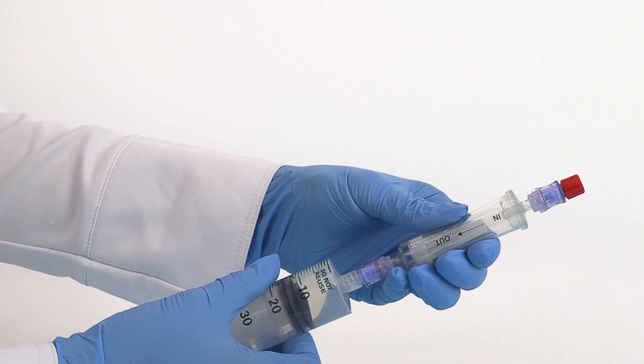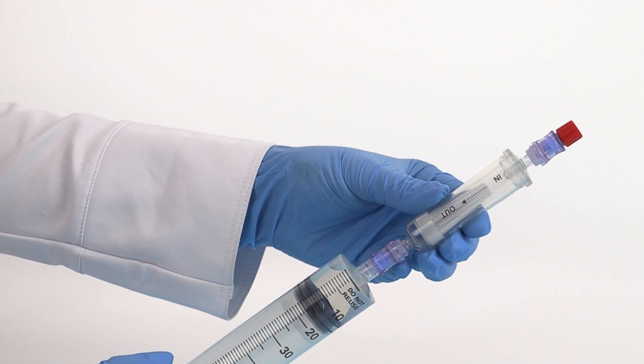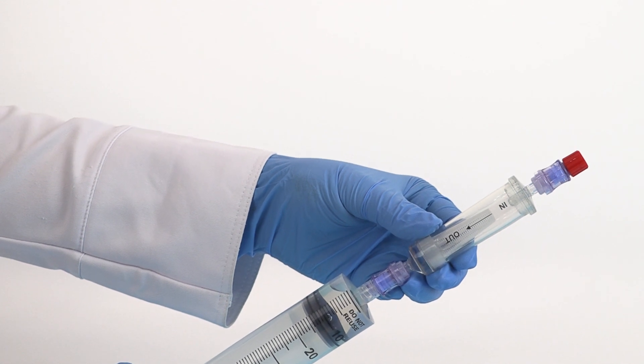Connect the Heparin syringe to the outport of the BMA filter and prime the filter by injecting and removing the anticoagulant.